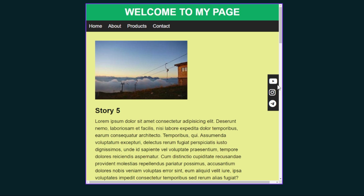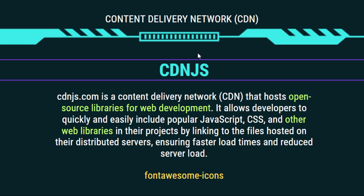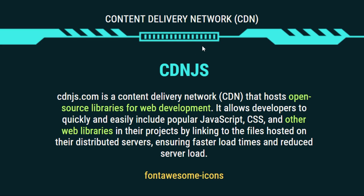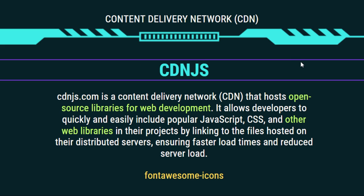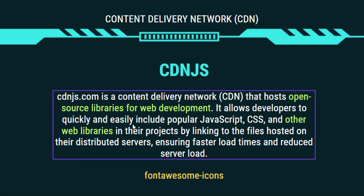Our example is going to be a list of social media icons that you can place in your web application — like for YouTube, Instagram, or other social media websites. For these icons we're going to be utilizing a CDN, or Content Delivery Network, like cdnjs.com — a content delivery network that hosts open source libraries for web development, allowing developers to quickly include JavaScript, CSS, and other web libraries.